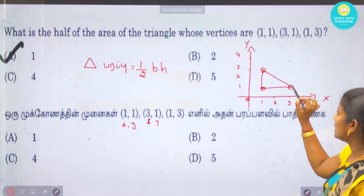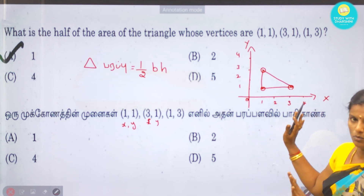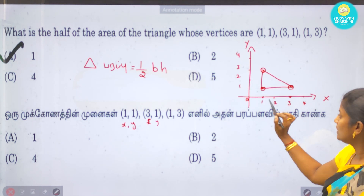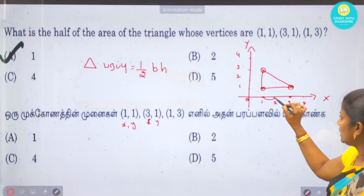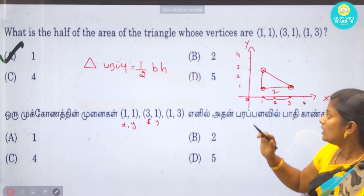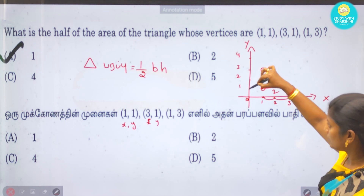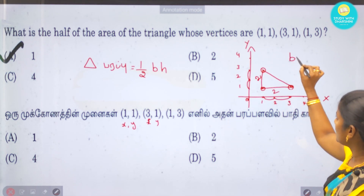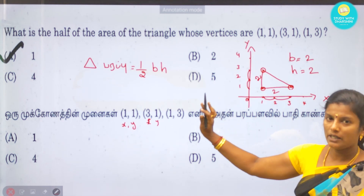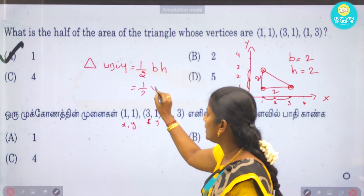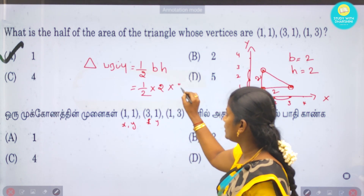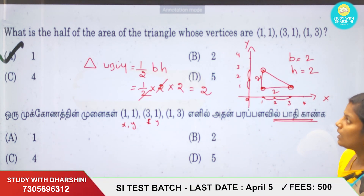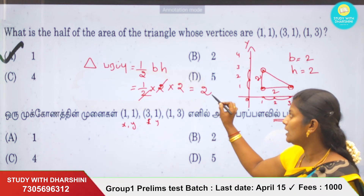Now we have a triangle and will solve for its area. Looking at the base from (1,1) to (3,1), the measurement is 2 units. Looking at the height, that is also 2 units. So base = 2 units, height = 2 units. Applying the formula: Area = 1/2 × base × height = 1/2 × 2 × 2 = 2 square units.